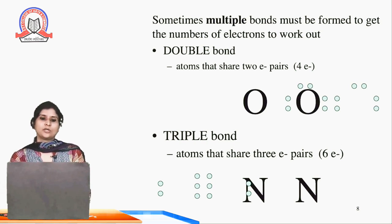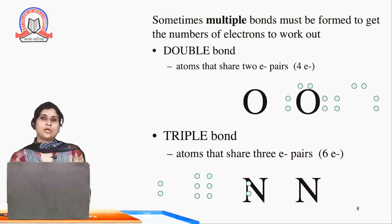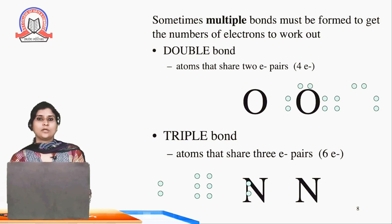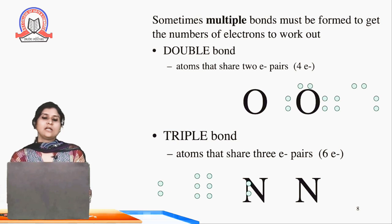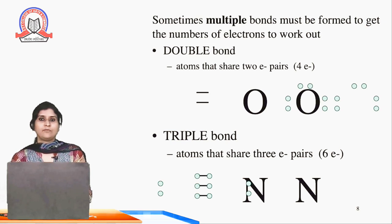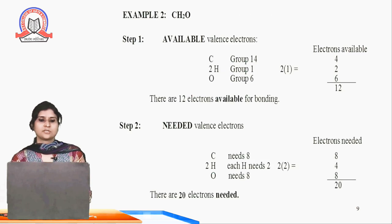Sometimes multiple bonds must be formed to get the electron numbers to work out. For a double bond, we can see the example of oxygen, in which atoms share 2 electron pairs, forming a double bond. Similarly, in nitrogen, atoms share 3 electron pairs, so they can form a triple bond. We can see 3 electron pairs in nitrogen forming a triple bond, and 2 electron pairs in oxygen forming a double bond.